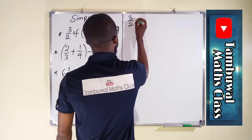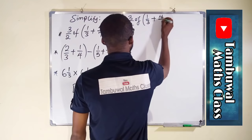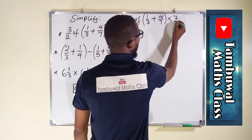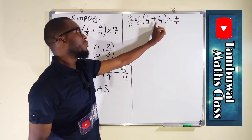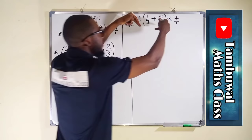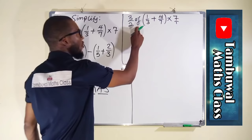Let us begin with the first problem: 3 over 2, of 1 over 3, plus 4 over 7 times 7. We can rationalize 7 as 7 over 1, since 7 over 1 is still 7. Following BODMAS, we have a bracket, so we must begin with 1 over 3 plus 4 over 7, as these are the fractions inside the bracket. After the bracket we move to Orders, where 'of' is part of Orders.